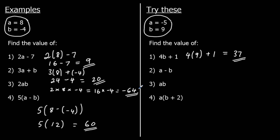Question 2: a minus b. So a is negative 5 and b is 9. So negative 5 minus 9. Negative 5 down 9 goes to negative 14.